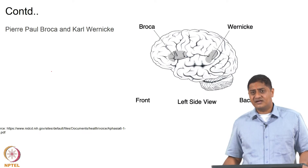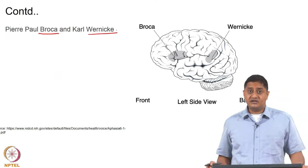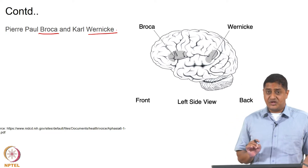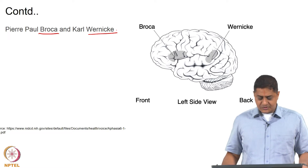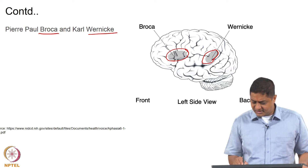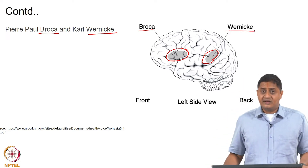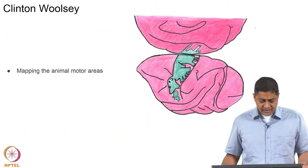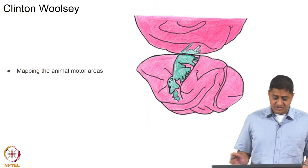In the second half of the 19th century, the first studies that implicated localization of function in the cortex were performed by Broca and Wernicke, who documented specific deficits in language when specific regions of the brain were lesioned. This gave rise to the identification of regions that now bear their names — Broca's area and Wernicke's area.